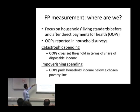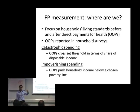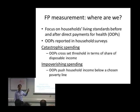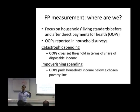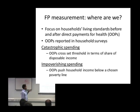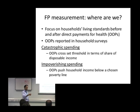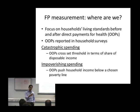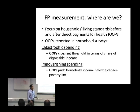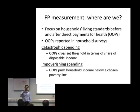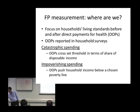Specifically, catastrophic spending is said to occur if out-of-pocket payments for healthcare from a given household are above a given threshold in terms of household disposable income. The threshold is normally set between 10 to 40 percent of what the household earns in income, and then the incidence of catastrophic payments is calculated in that population of interest. A second popular metric has been to calculate the incidence of impoverishing spending, which is the proportion of people pushed below a given poverty line due to medical care payments.